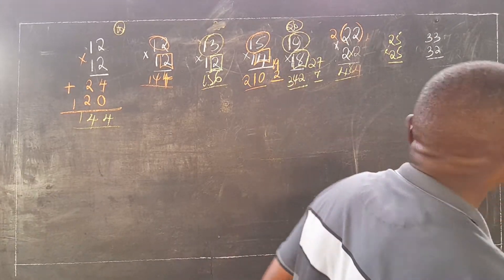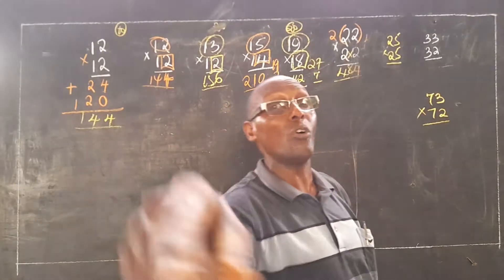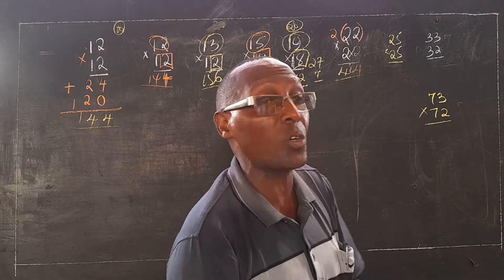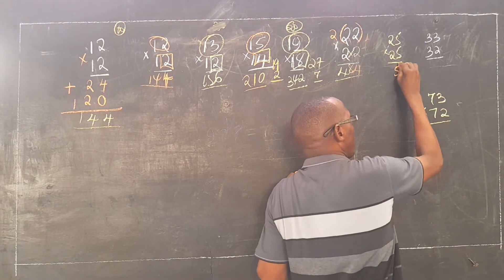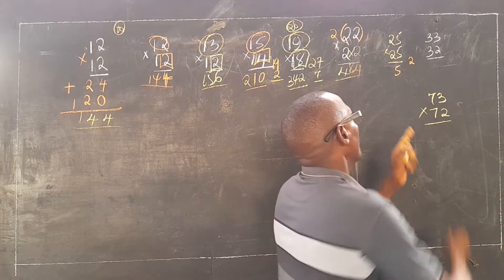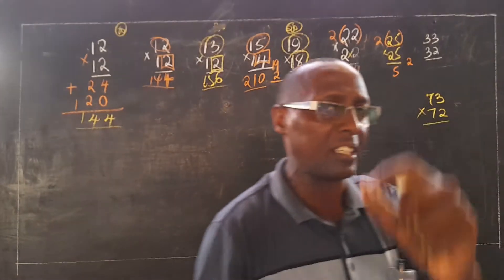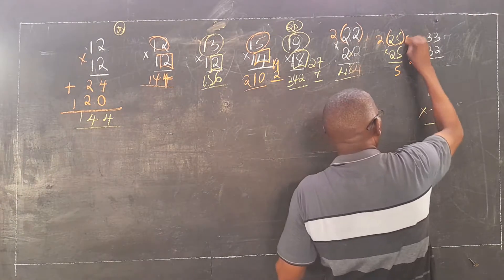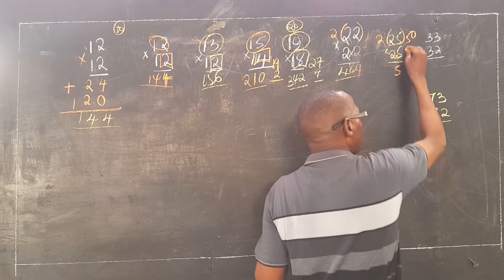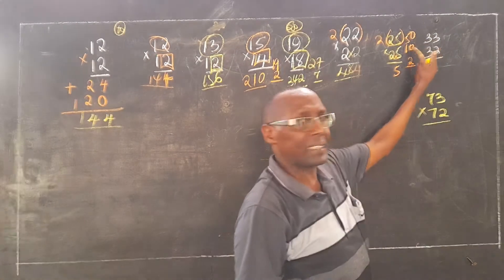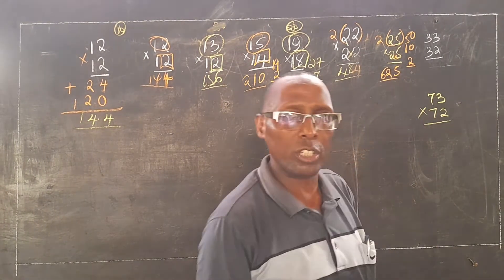You come to 25 times 25. I'm using numbers which you even know the answer so that you can get the concept properly. 5 times 5 is 25 — write 5, carry 2. You multiply this number by 2 because it is in the place value of 10. You get 50. Remember we are carrying 2. 2 times 5 is 10. 50 plus 10 is 60. Plus 2 is 62. Write 62 here. The answer: 625.